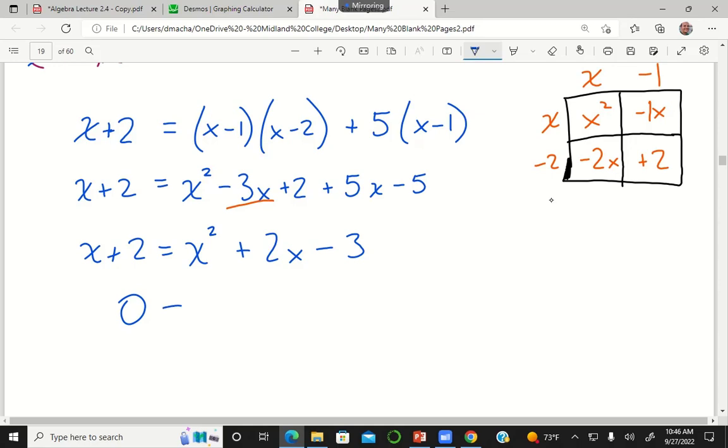If I want to make the left-hand side 0, then my right-hand side, I have to subtract x. So like that. And then subtract negative 2.